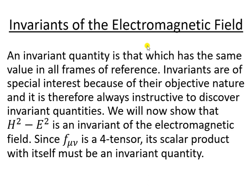Since we are talking about the electric field and magnetic field, we want to work with a scalar form. We want to show this is an invariant by expressing it as a scalar quantity — for example, H-squared involves H components. If we consider the field tensor and take a scalar product, we want to prove that this quantity is a 4-tensor scalar product.